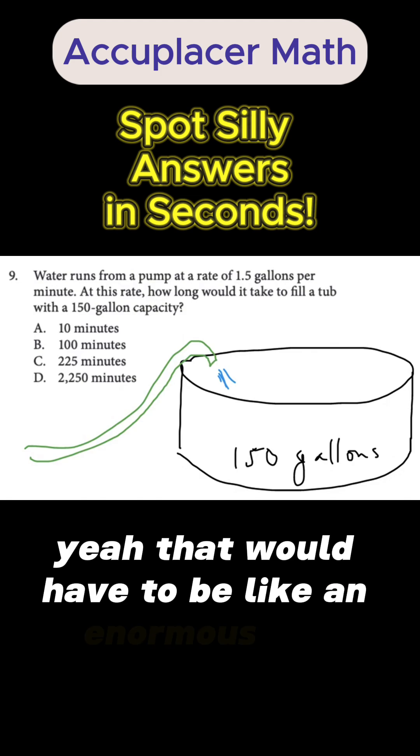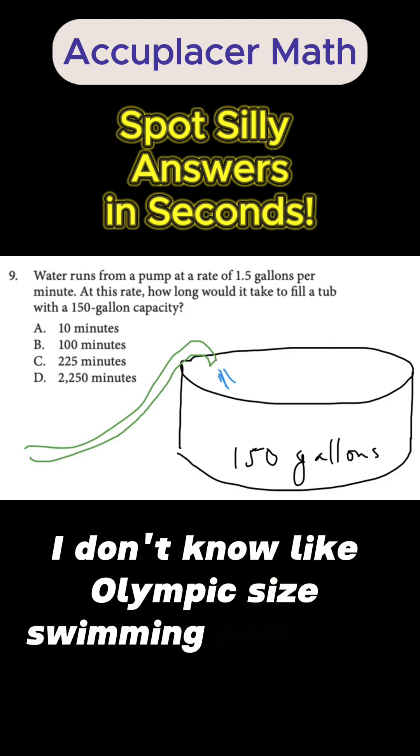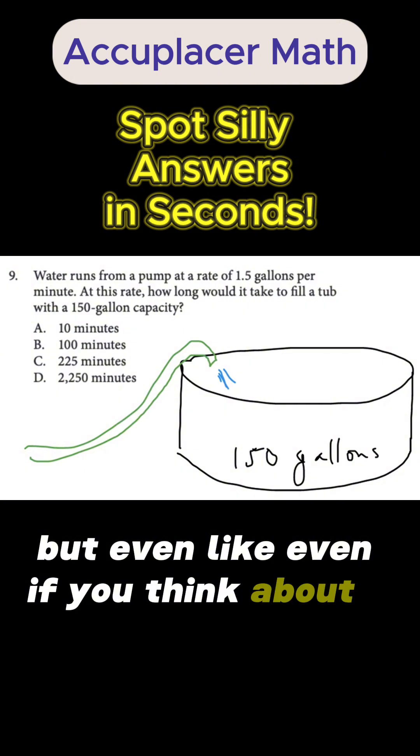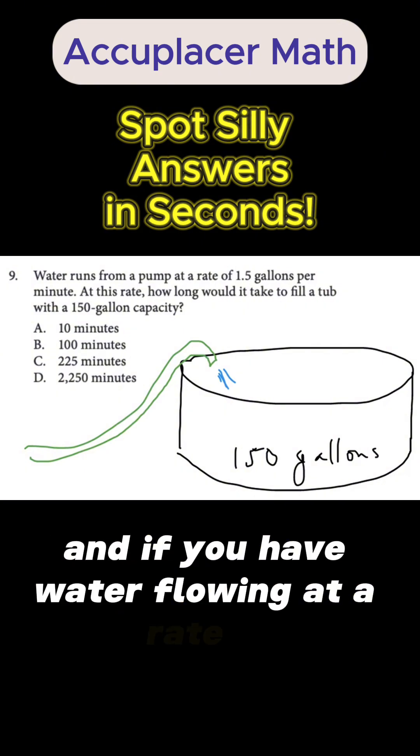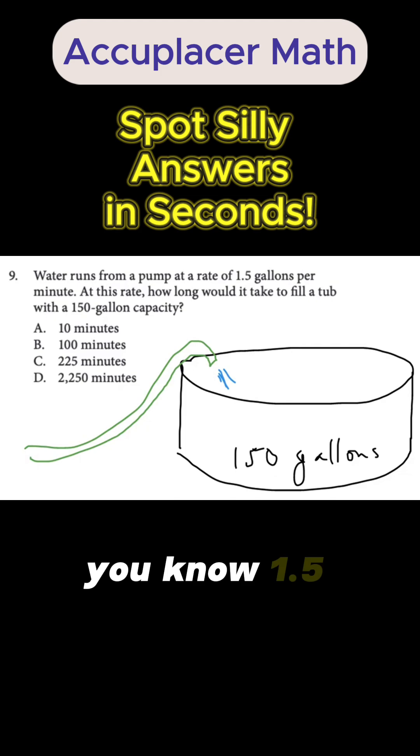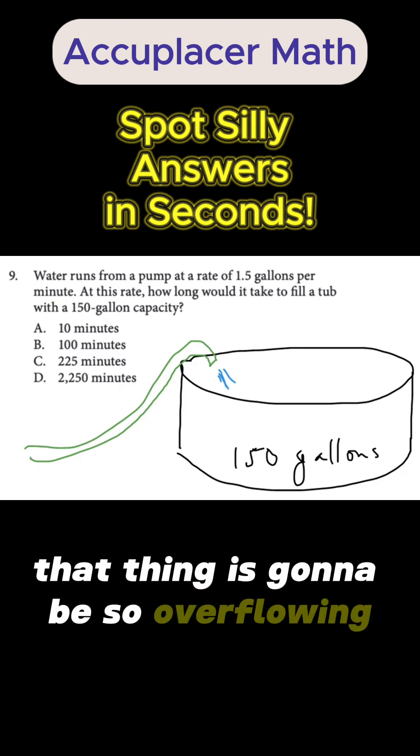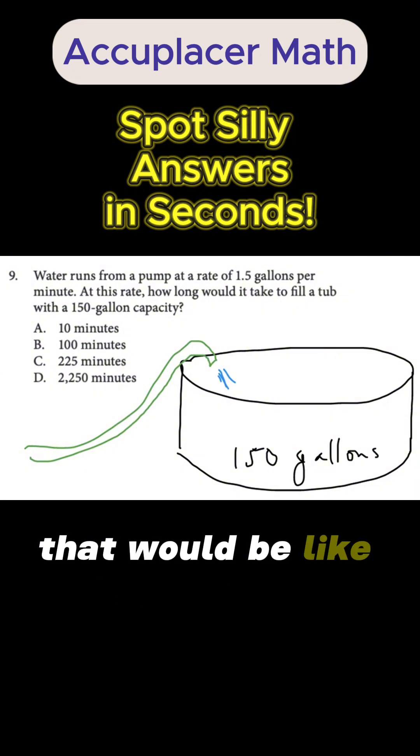That would have to be like an Olympic-sized swimming pool, right? But even if you think about it logically, you've got a 150-gallon tub, and if you have water flowing at a rate of 1.5 gallons per minute, 2,000 minutes is really, that thing is gonna be so overflowing. I mean, that would be like an Olympic-sized swimming pool, I'm guessing. So yeah, I would get rid of D.